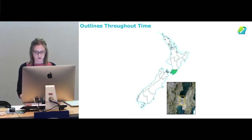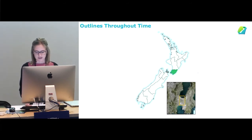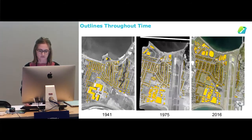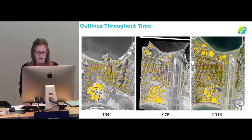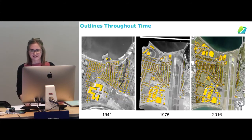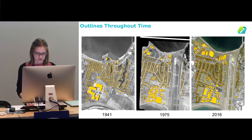To demonstrate the capabilities of the dataset, we're going to go back into the past and look at Rongatai in Wellington — and give you a bit of a Wellington history lesson. We chose this area because the building outlines have changed quite dramatically over time. The ones from 2016 are taken from the actual dataset, but 1941 and 1975 were painstakingly hand-digitized by our technical lead Daniel.